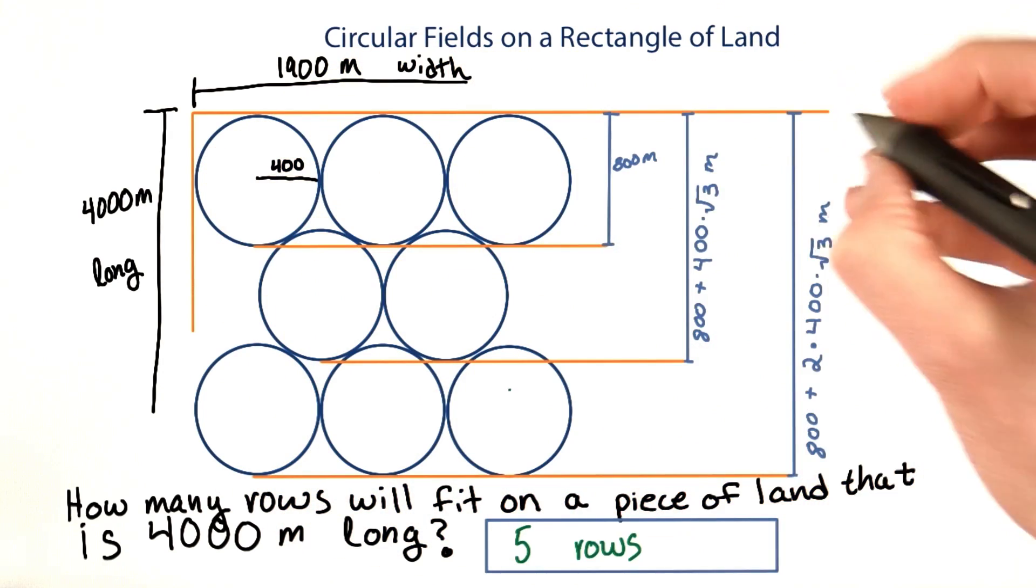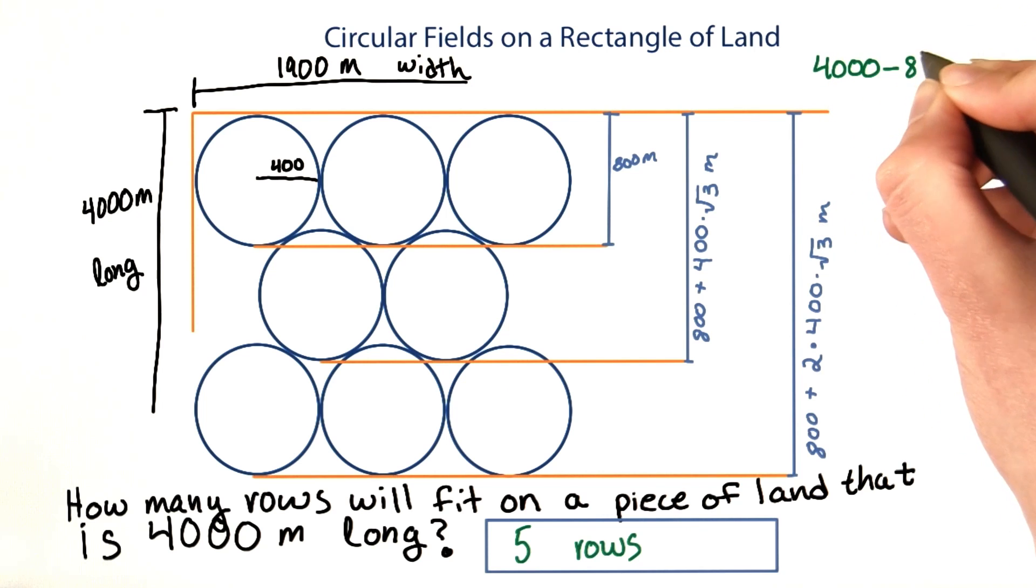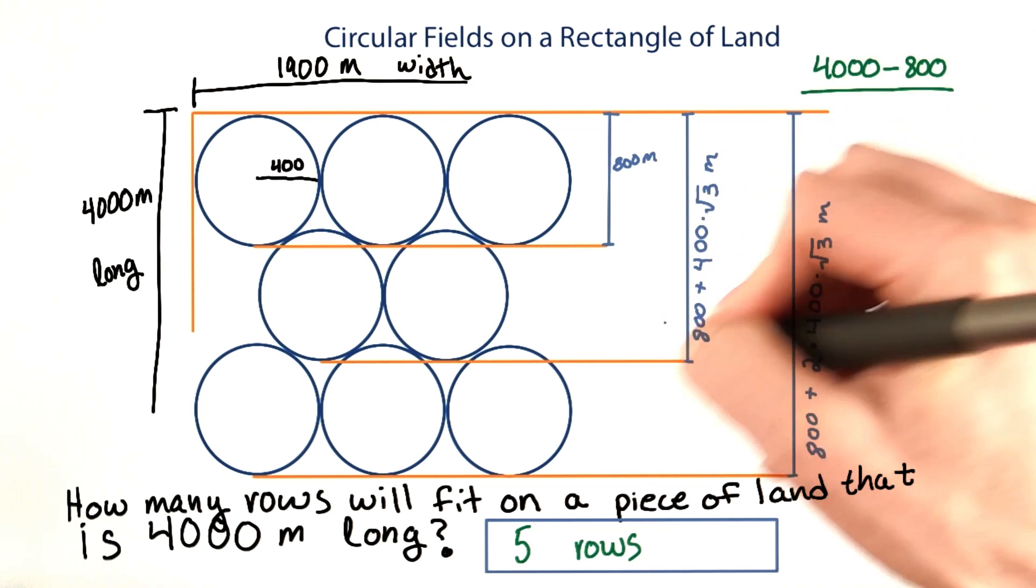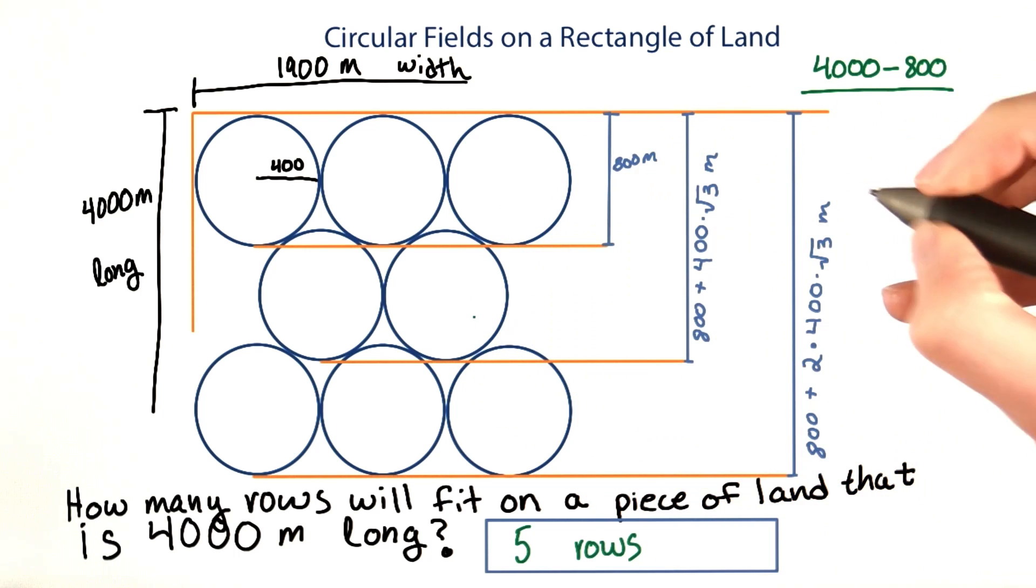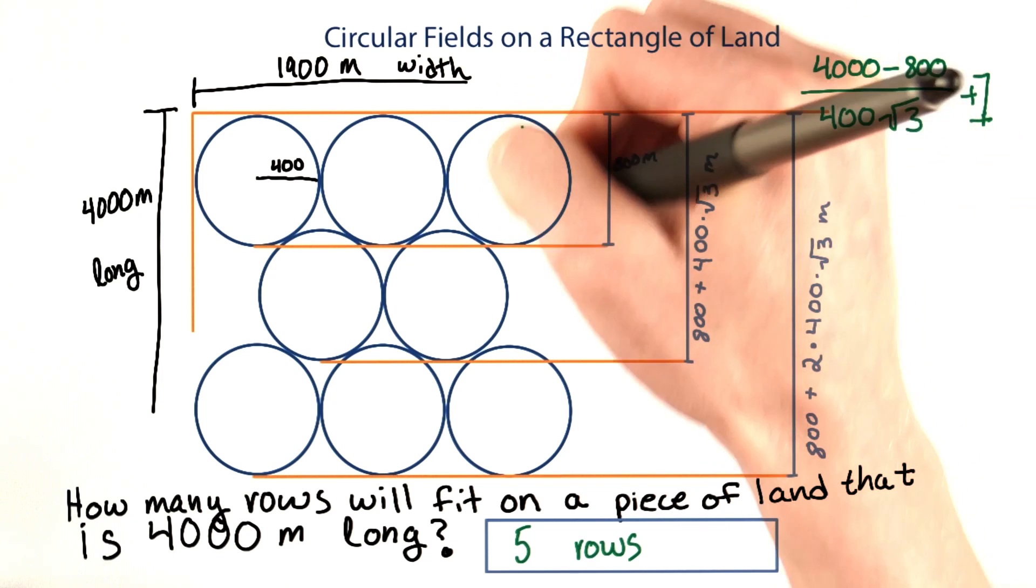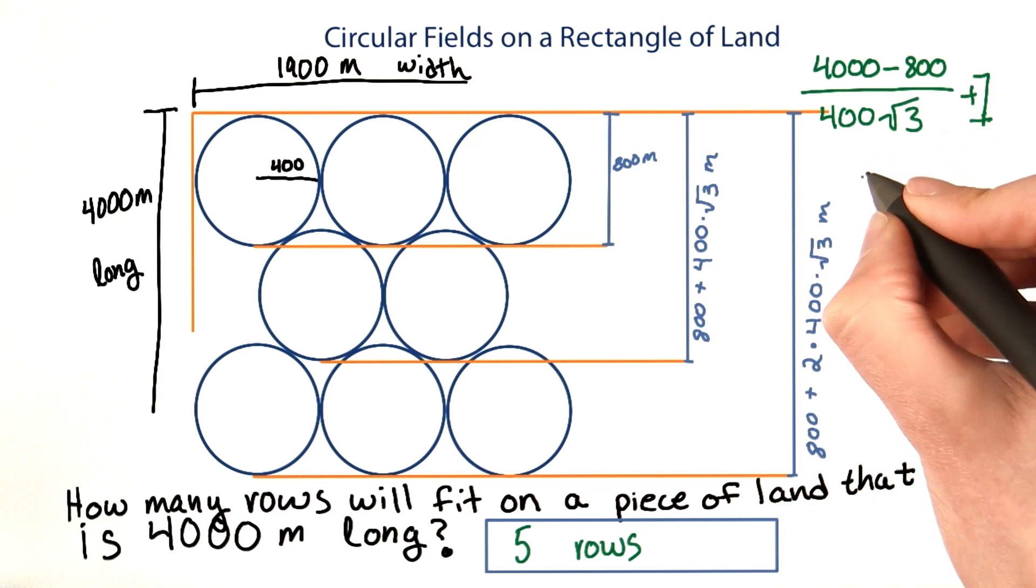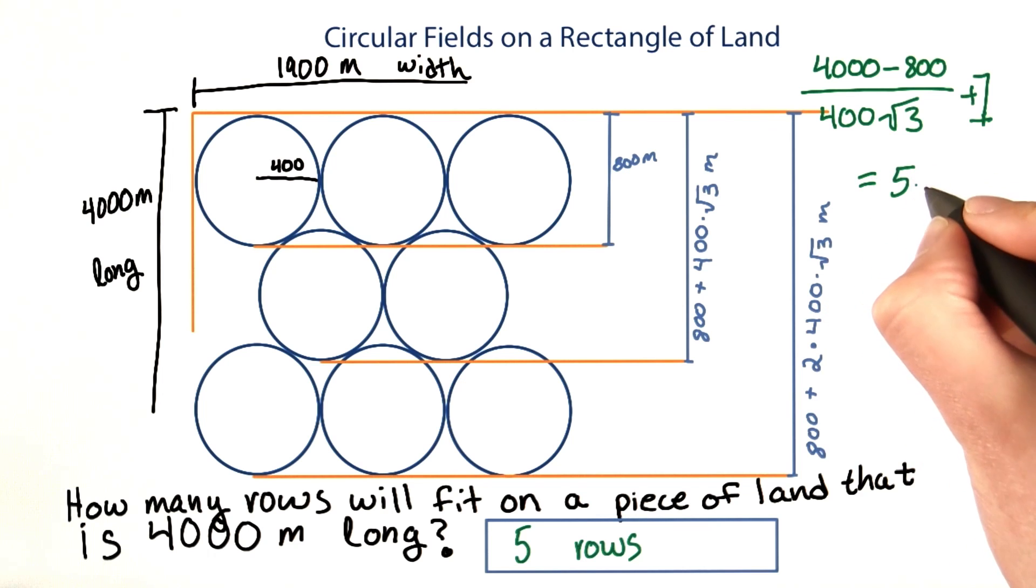So to get the total number, we can do 4,000 minus 800 over how much we need for another additional row, so 400 root 3, and then we add 1 because there's that first row that took up 800. This calculation would give us 5.61.